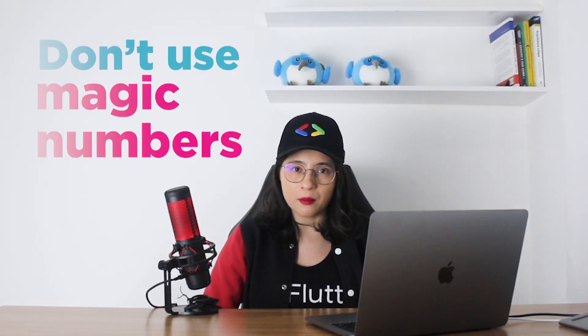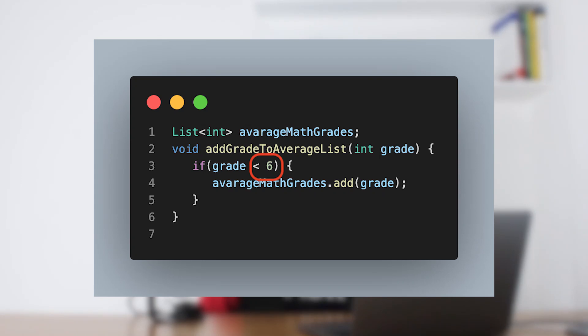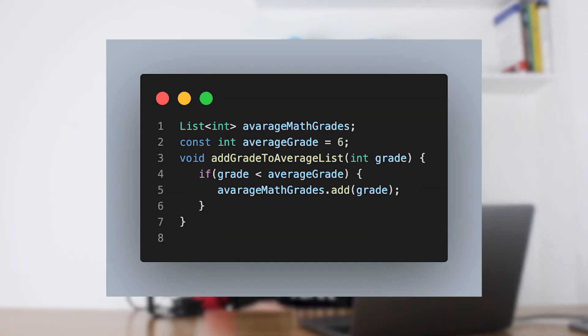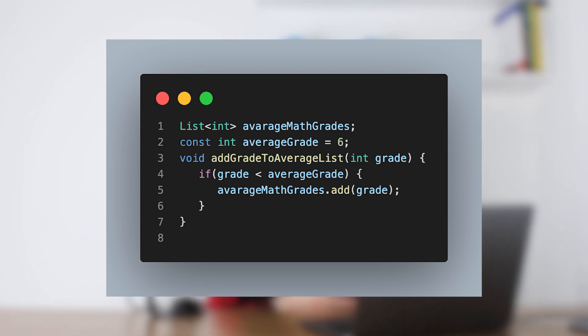Don't use magic numbers. If there's a number in the middle of the code, it often seems that it came out of nowhere — just like magic. Here's an example of this kind of magic number we shouldn't have: a function that saves a grade to a list in case the grade is less than 6. Here, the 6 is the magic number. What we should be doing instead is storing this number in a variable that describes what it means, which in this case is the average grade.